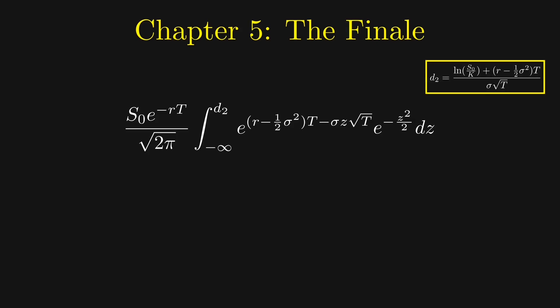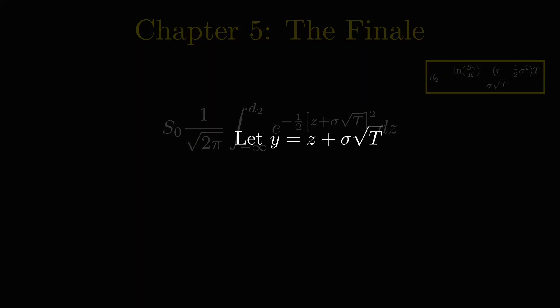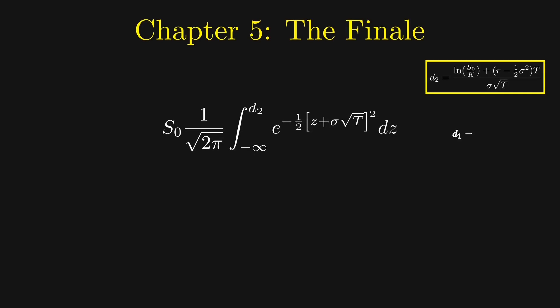Now we further investigate the first half. By completing the square on the exponents, we get this form, which looks somewhat like the cumulative distribution function of the standard normal distribution. When we let y be the term inside the square, we get a new upper bound d_2 plus sigma times the square root of T. We label this new upper bound d_1.